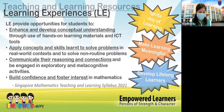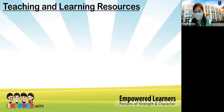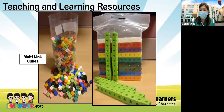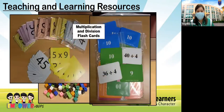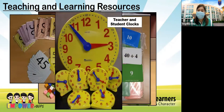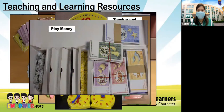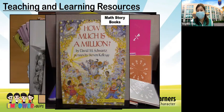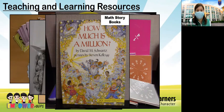Some teaching and learning resources your child may use across six years include multi-link cubes for number sense, multiplication and division flashcards, teacher and student clocks for time, play money, fraction materials from Primary 2 onwards, and even math storybooks — which are used up to upper primary levels to keep learning engaging.